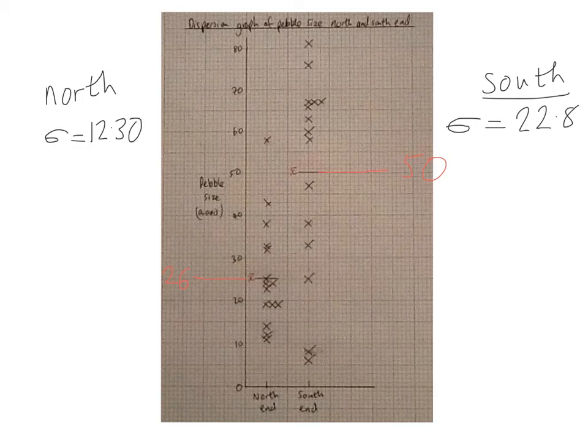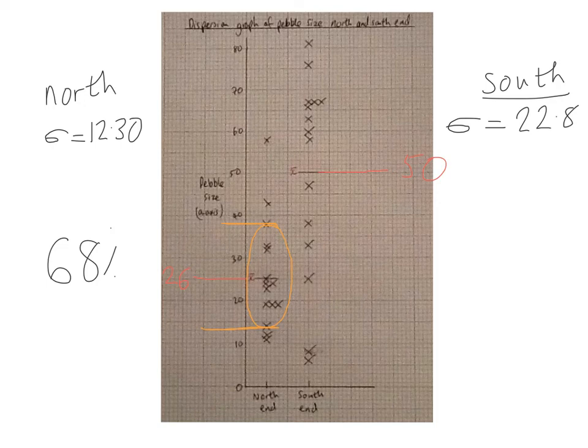The best way to explain the results of standard deviation is to return back to this dispersion graph. Let's look at the north end of the beach where we had a mean of about 26 millimeters for our pebble. Standard deviation for the north end of the beach is 12.3. And that means that 68% of all of our data here in the north end lies within 12.3 of the mean. So if we add 12.3 on to 26 we get to roughly 38 here. And that means that 68% of all of our data for the north end lies within 12.3 of our mean. And you can see actually the data is quite clustered together. It's close to the mean.